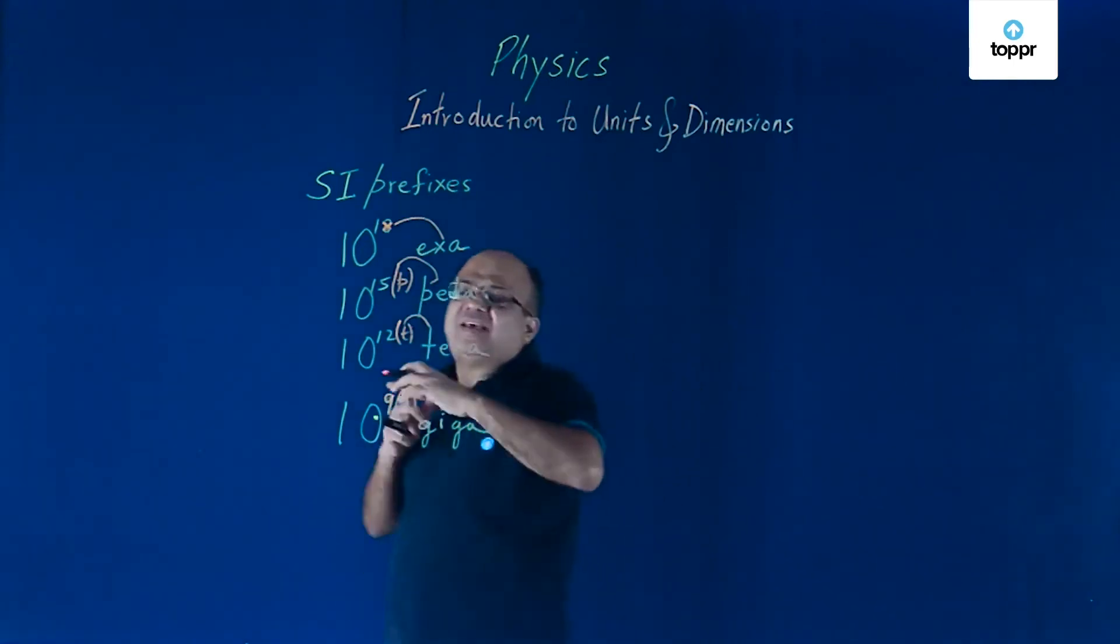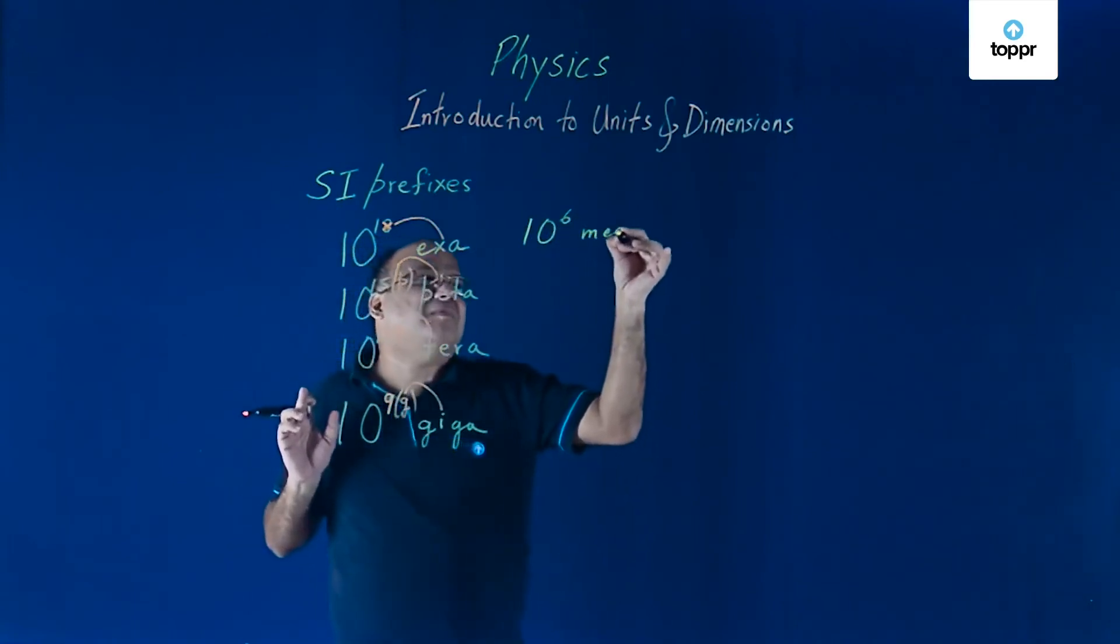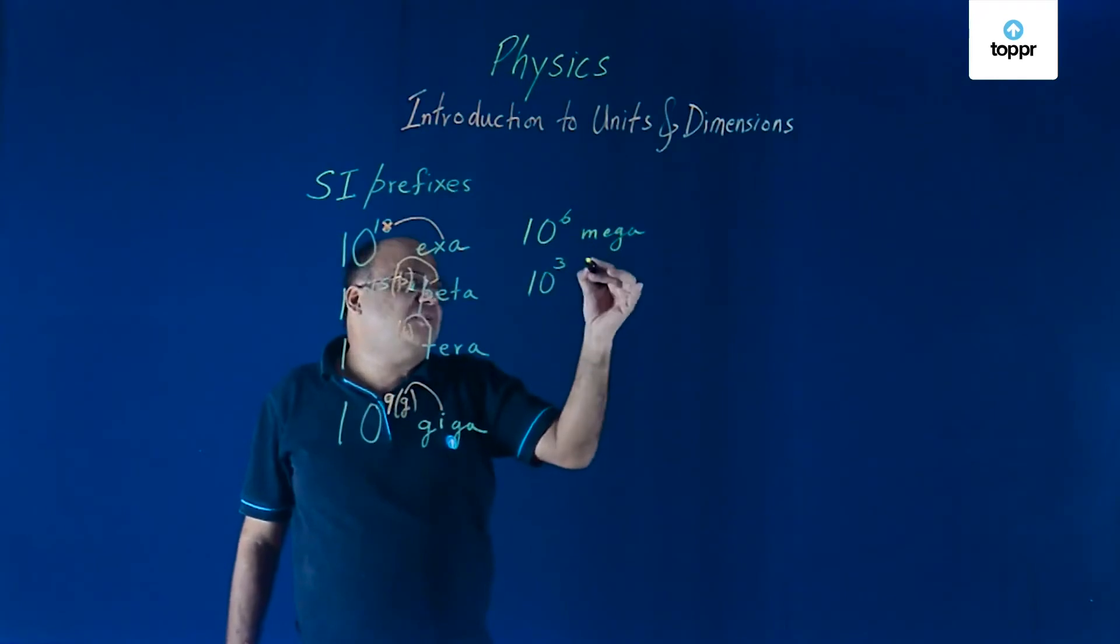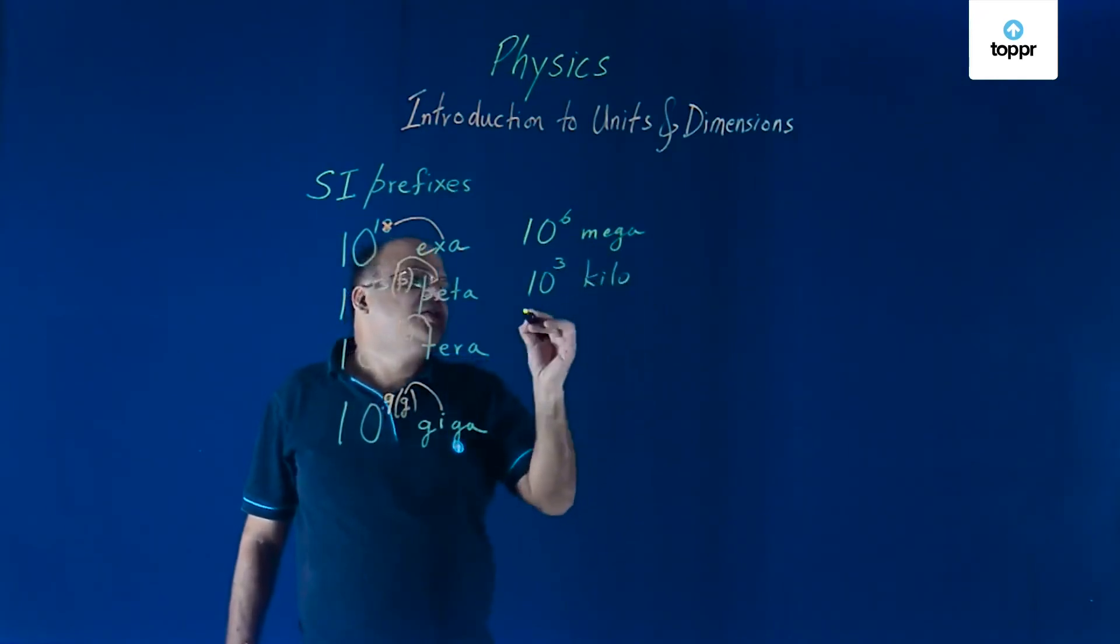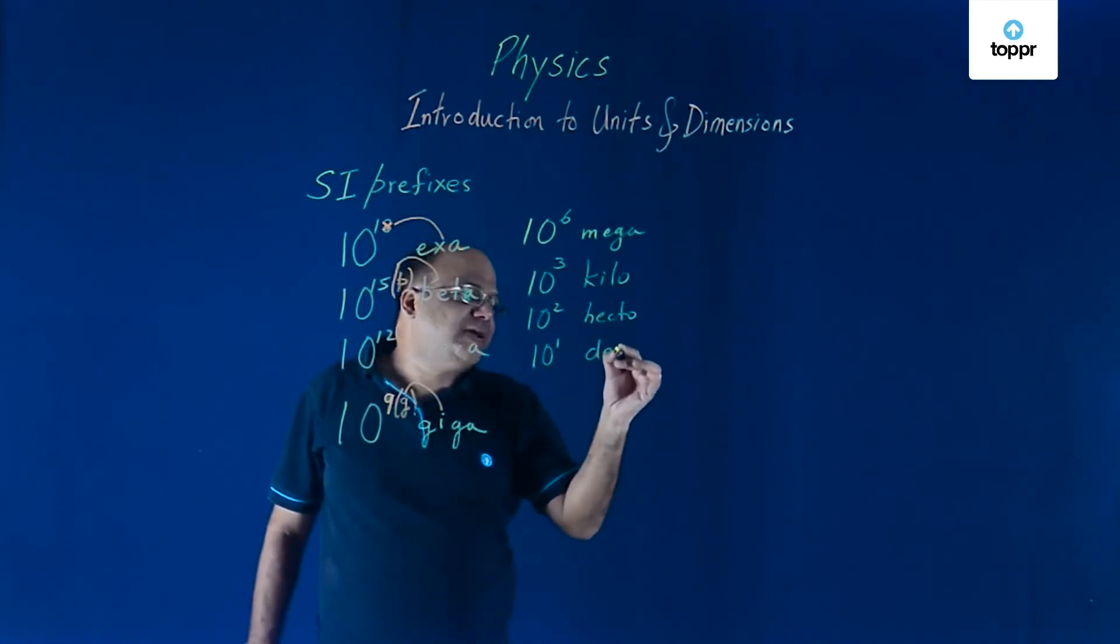10 to the power 6 is called MEGA. That I think you can remember. 10 to the power 3 is more common, KILO. 2 HEKTOR, you might have learned in school. 1 DEKA.